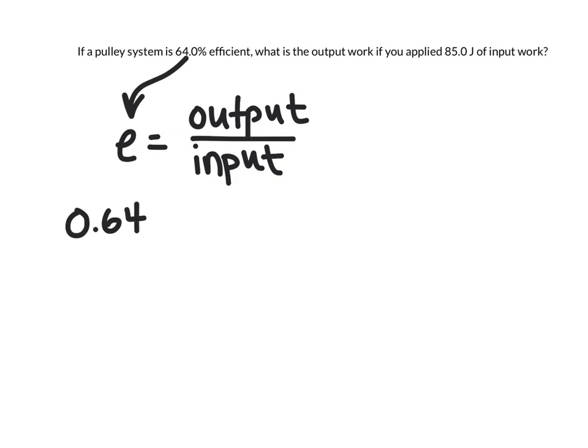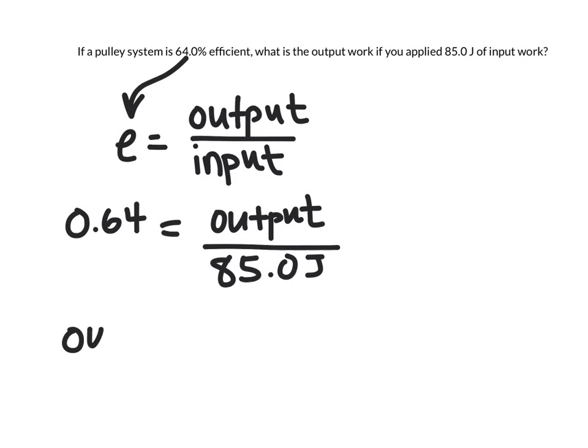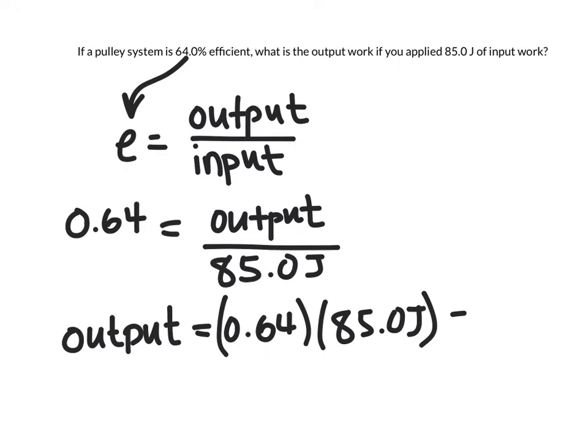And I'm going to calculate the output force, and I know the input force, that's 85 joules. So if I multiply both sides of the equation by 85, I'll be able to determine the output force. And so I'd have 0.64 times 85 joules, and I would end up with an output force, or the force that the machine would be able to do, of 54.4 joules.